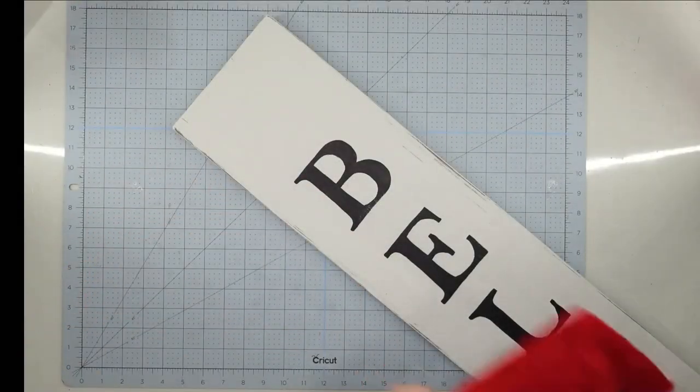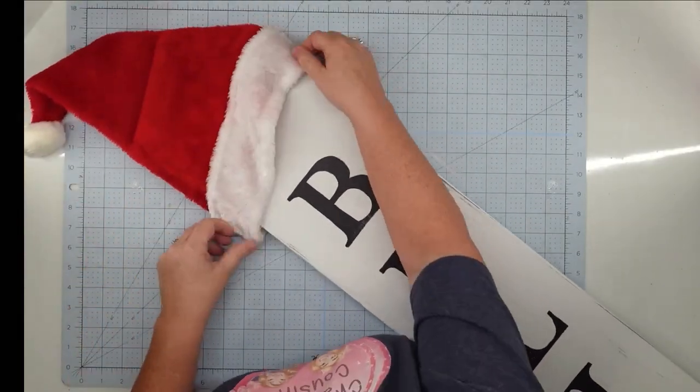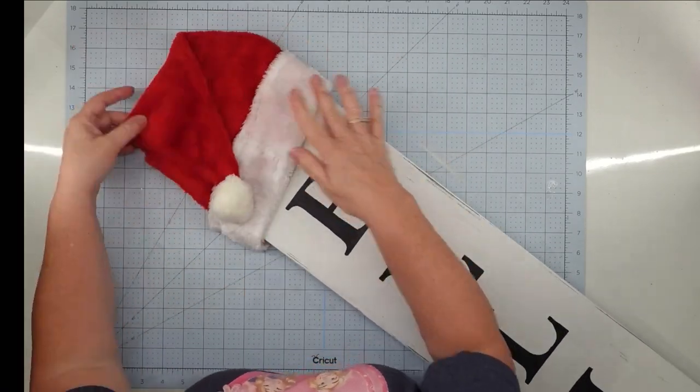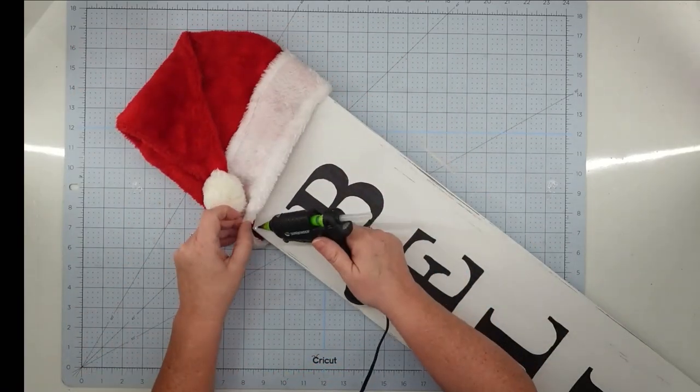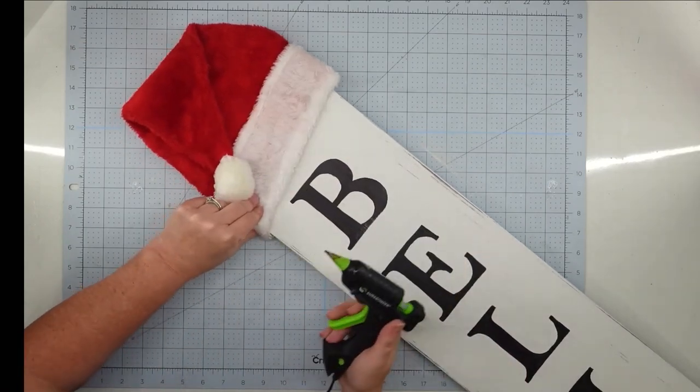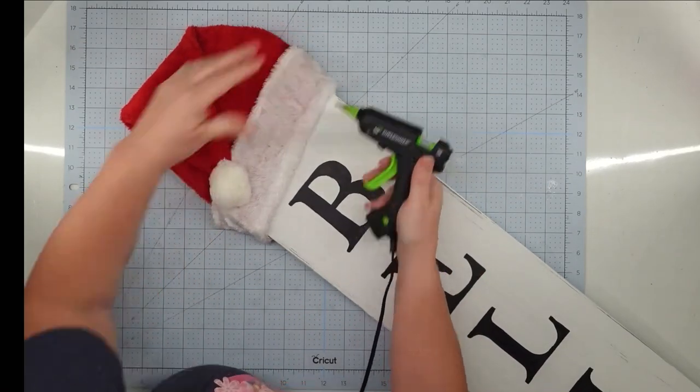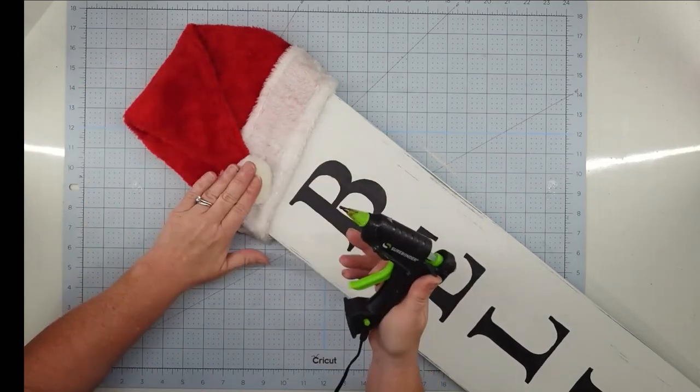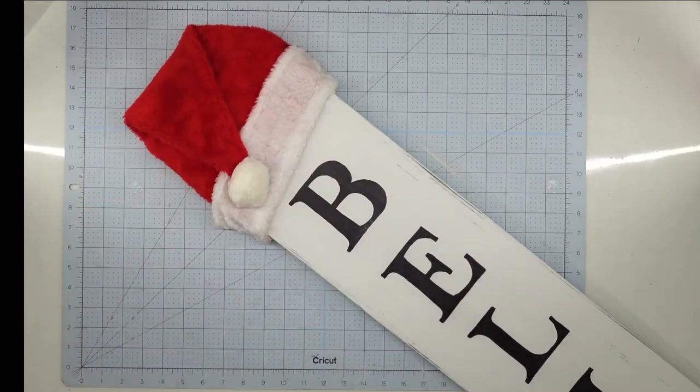The last thing I'm going to do is take my Santa Claus hat. I'm going to put it over the end of my board kind of at an angle. I'll use some hot glue on the front a little bit on the sides and a drop or two on the back and then I'm also going to glue down my little ball there on the front so it stays in place and this project is finished.